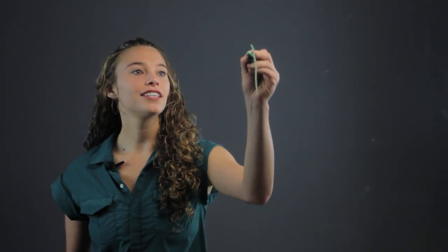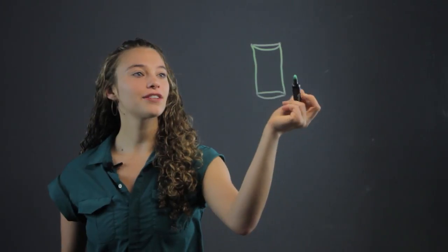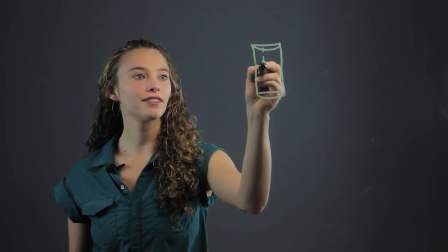Let's look at a cylinder. The volume of anything is going to be the height of the shape multiplied by the area.